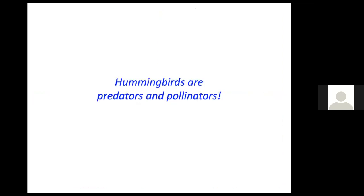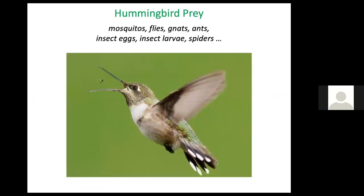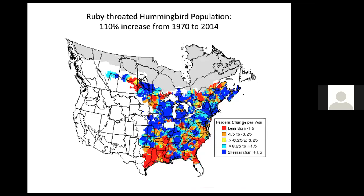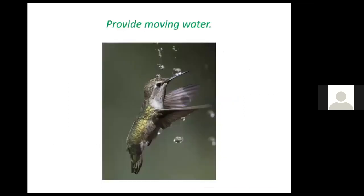Now let's move on to hummingbirds, which are both predators and pollinators. They are excellent hunters, including a number of insects in their diet such as mosquitoes, flies, gnats, ants, insect eggs, insect larvae, and spiders. The ruby-throated hummingbird is the only hummingbird you're likely to see here in New England — occasionally a rufous might show up, but generally it's the ruby throat. Their population has doubled in the last half century, so we don't need to be concerned about their conservation status.